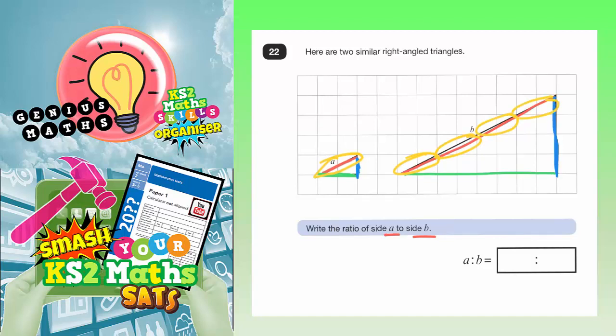So every time we go across one lot of diagonal squares on line A, we're doing that four times on line B. So that gives us our ratio of one to four,